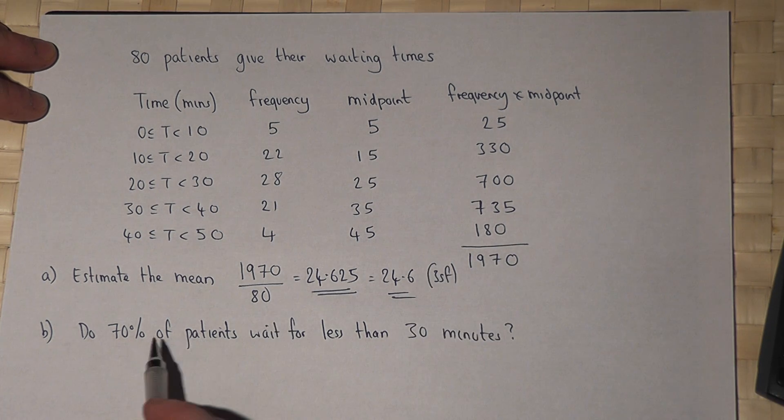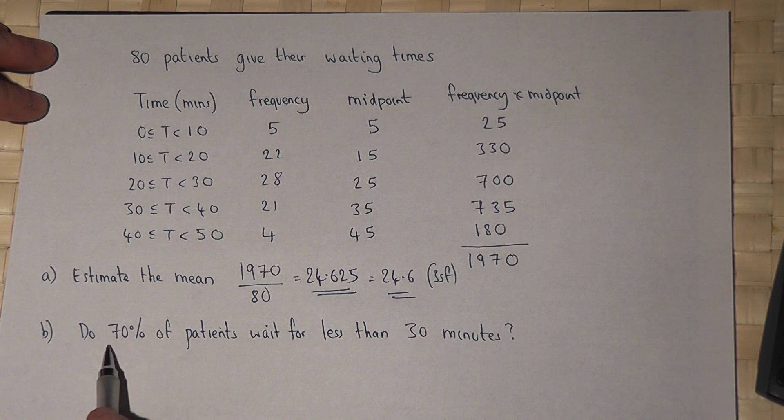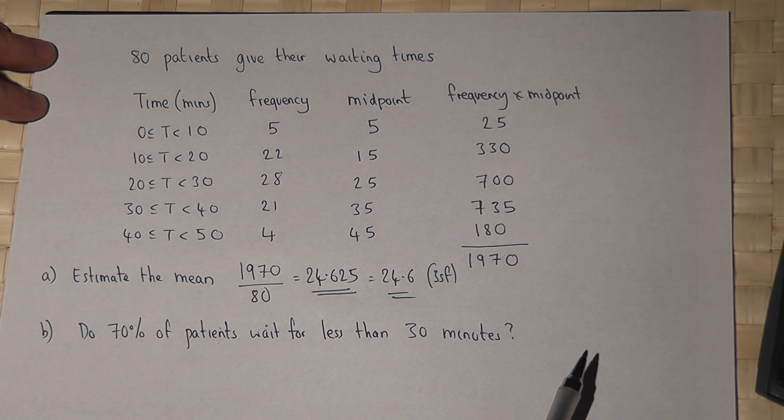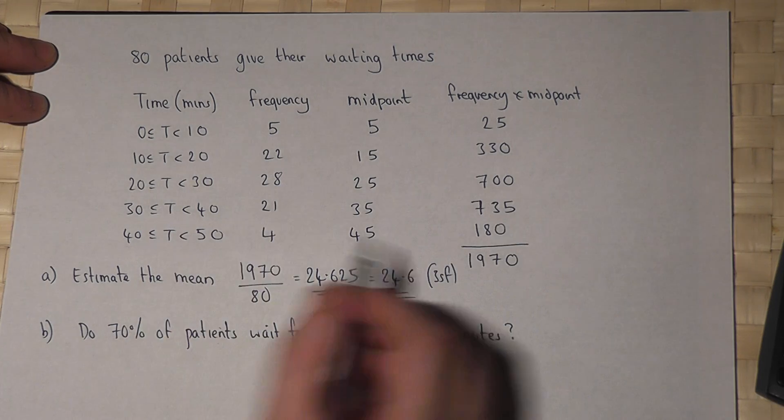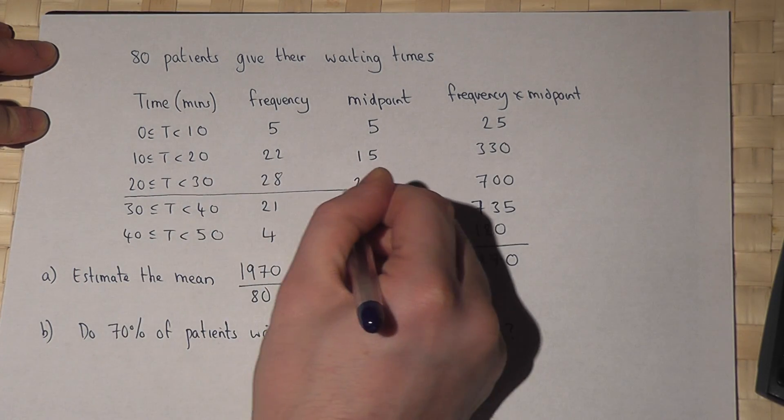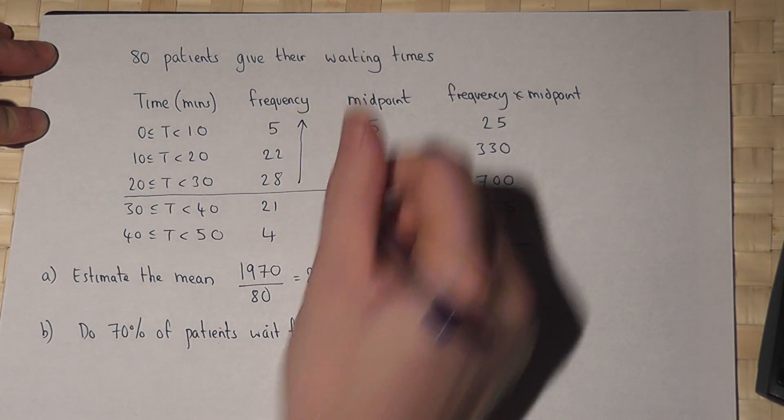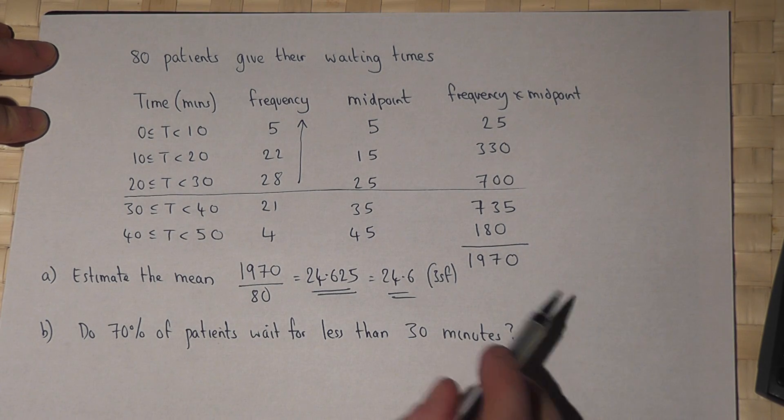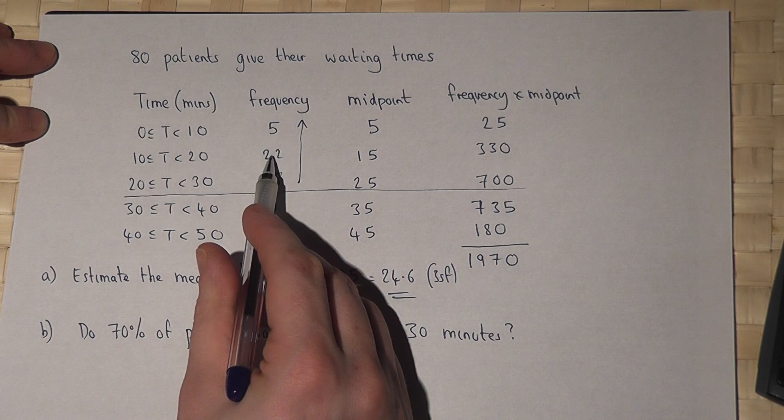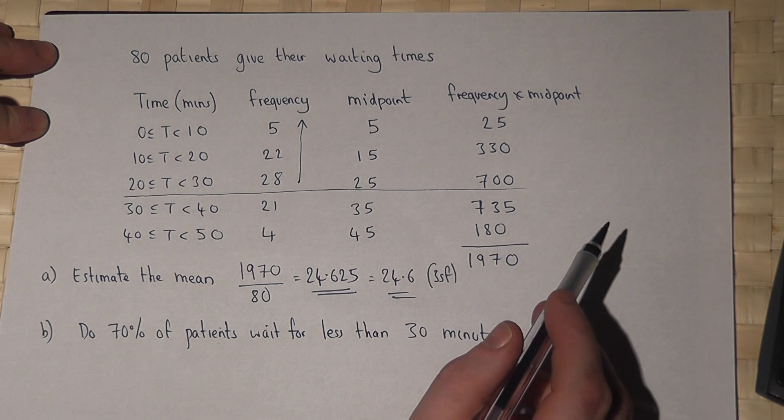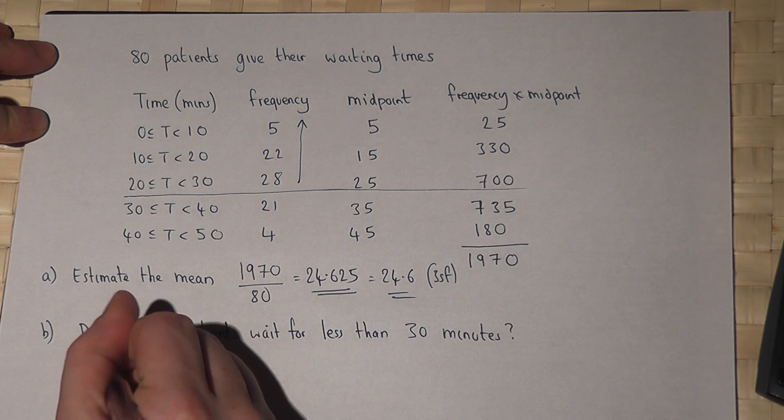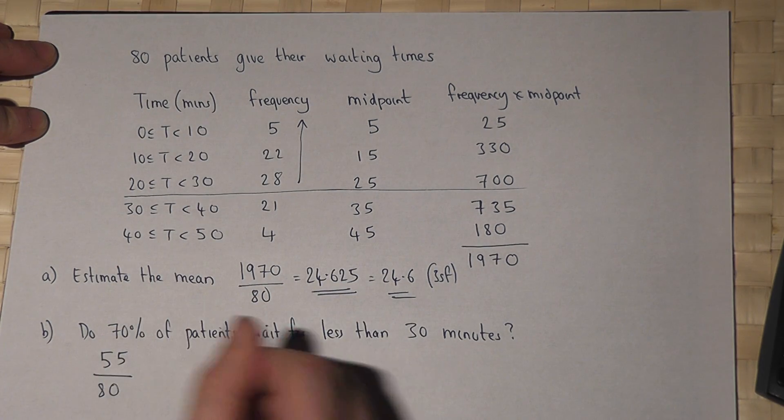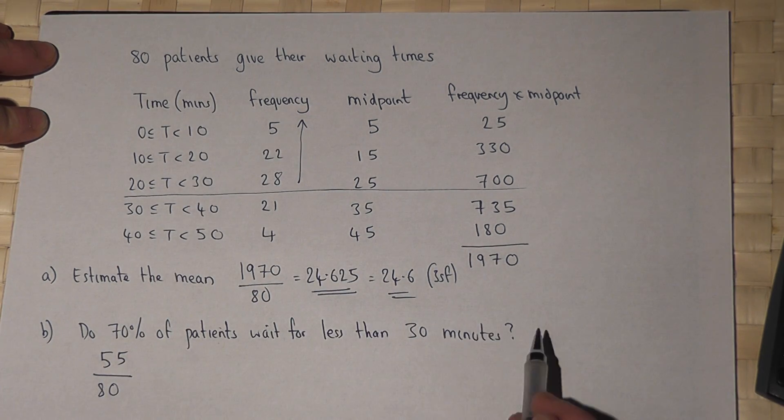Now in part B the question asks do 70% of patients wait for less than 30 minutes. Now the number of patients waiting for less than 30 minutes are these ones here. That's less than 30 minutes. So if we do 28 plus 22 plus 5 that works out at 55 patients out of 80 are waiting for less than 30 minutes.